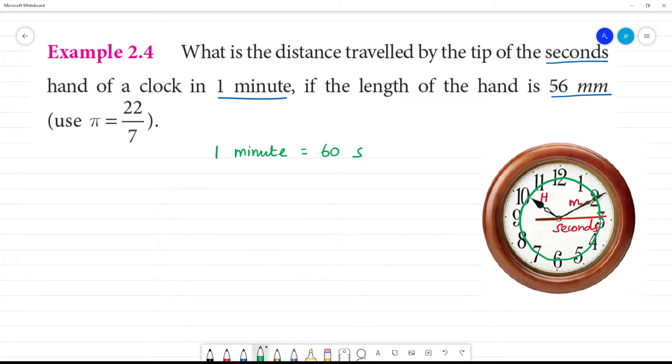So this is the circumference of a circle. If we calculate what we need to do, it means the circumference, it means distance travelled. This is the distance traveled. So circumference, we know circumference is equal to 2πr.